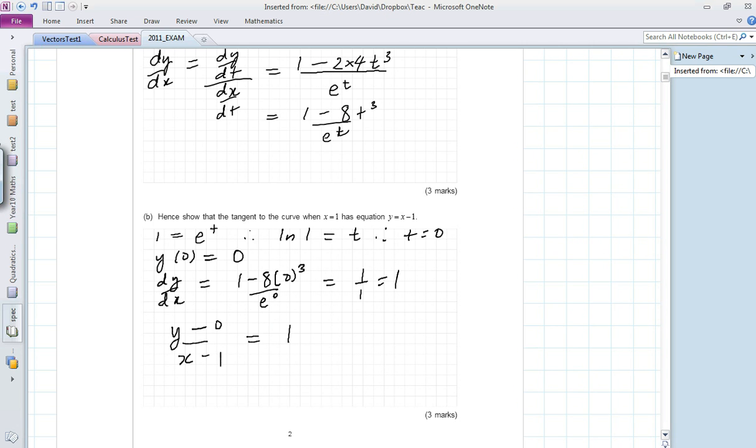So we take any particular point y, work out the difference with this particular point 0, same with x. Rearranging all of that, multiplying 1 by (x - 1), we get y equals x minus 1.